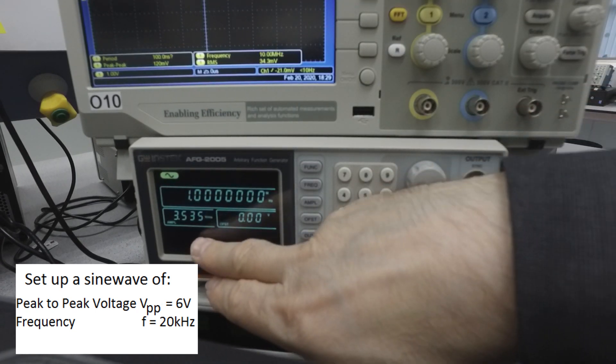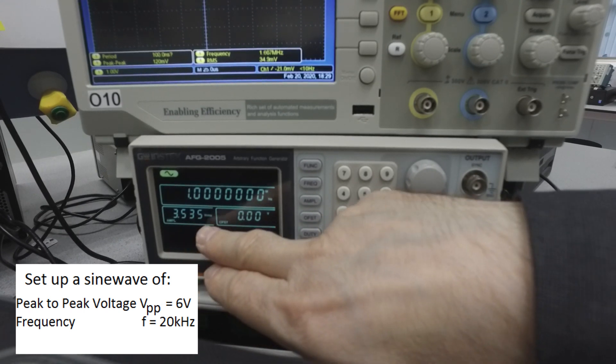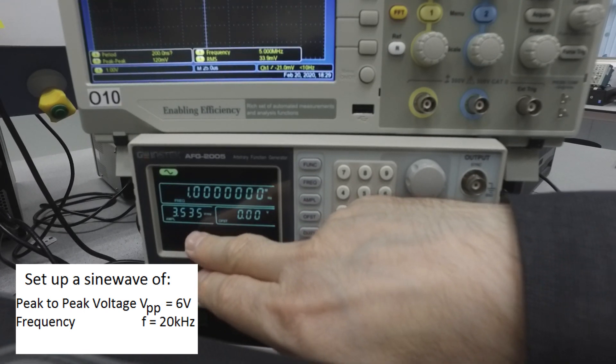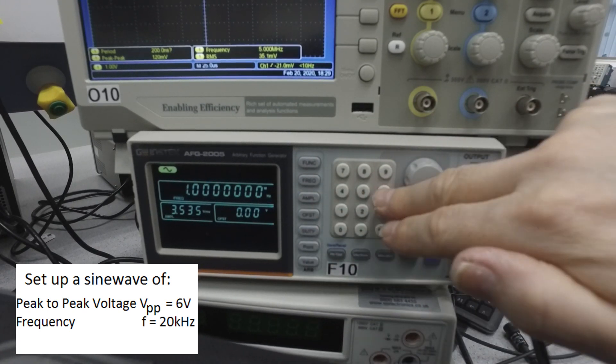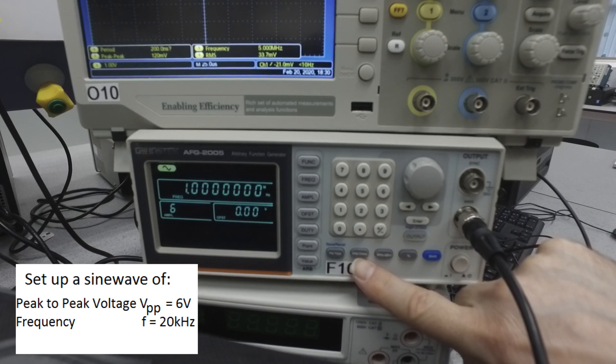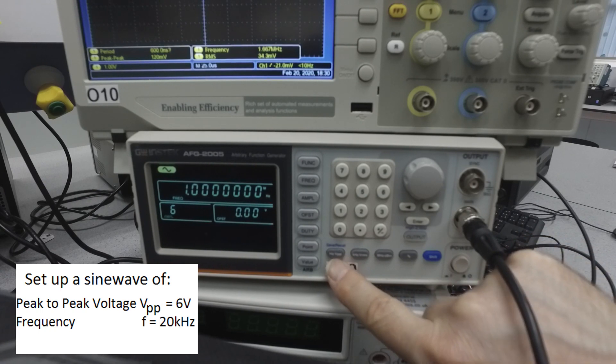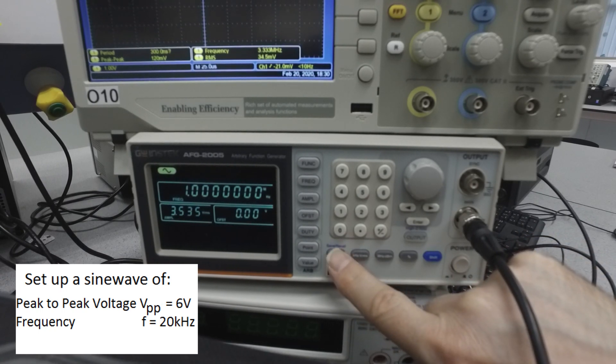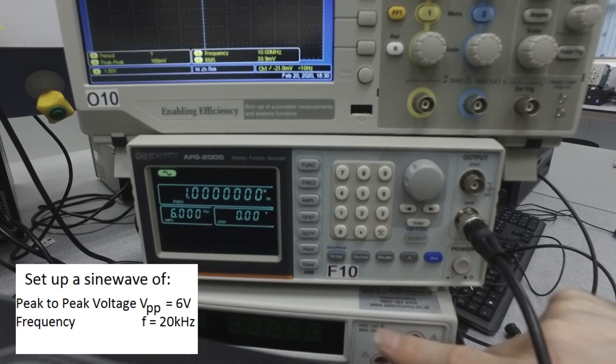Next, we want an amplitude of 6 volts peak-to-peak. This amplitude window here is currently showing volts RMS and a different value. So we need to select amplitude to change that, push 6, and then choose the appropriate units, which here is VRMS we don't want, but on the left there we have V peak-to-peak, so peak-to-peak voltage, 6 volts peak-to-peak. That is set.